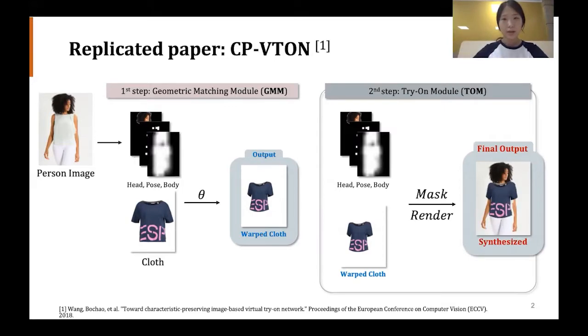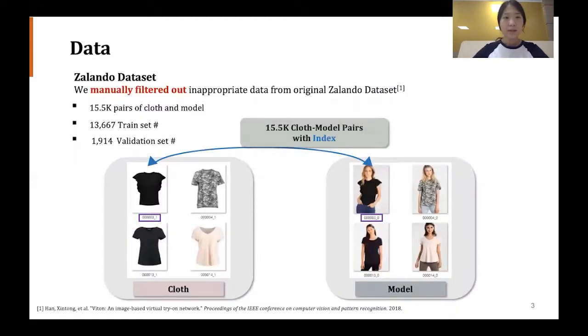Our RVTAN also follows this GMM-to-TOM network. The dataset we are using is the Zalando dataset collected by Han and others, but these datasets contain some anomaly data. So we manually filtered out all the inappropriate data from the original dataset, resulting in 15.5k pairs.